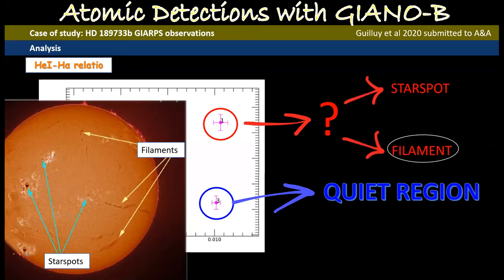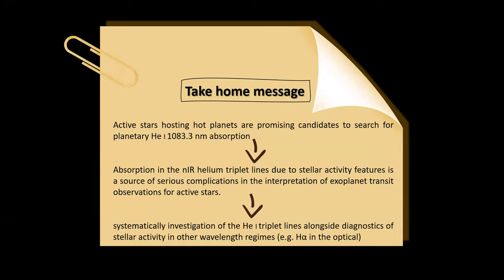So this is our analysis and this is my take-home message. We know that active stars are very promising candidates to search for planetary helium absorption. But the problem is that these active stars can have some features that can mimic some pseudo-signals during transits. And so we have to take attention at this and we have to exploit different diagnostics, both in the visible and in the near infrared, as we have done in this work, to understand the nature of this absorption. Thank you.